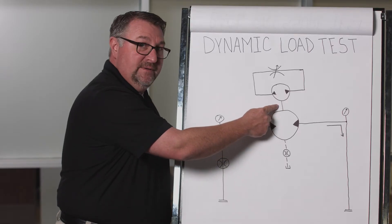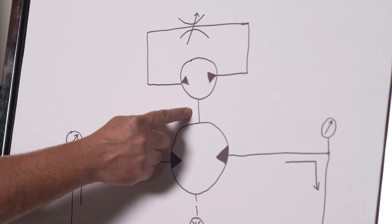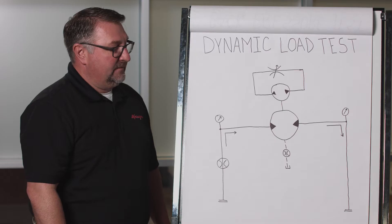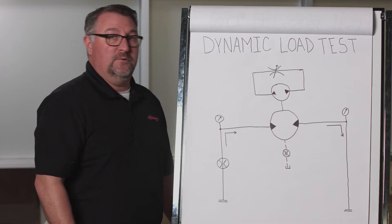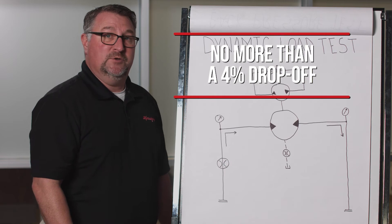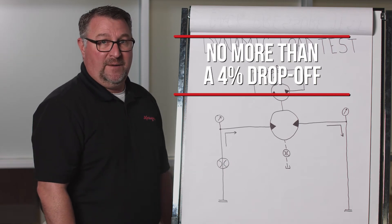We will then take another RPM reading and compare those two figures. To have a successful test according to Danfoss guidelines, we should have no more than a four percent drop-off.